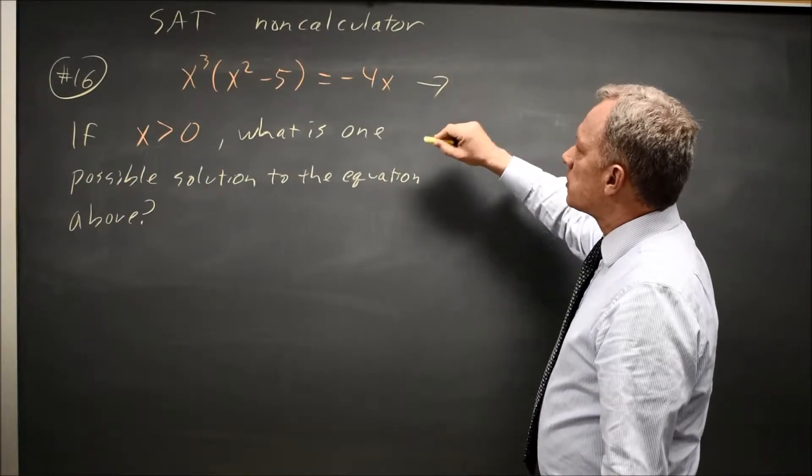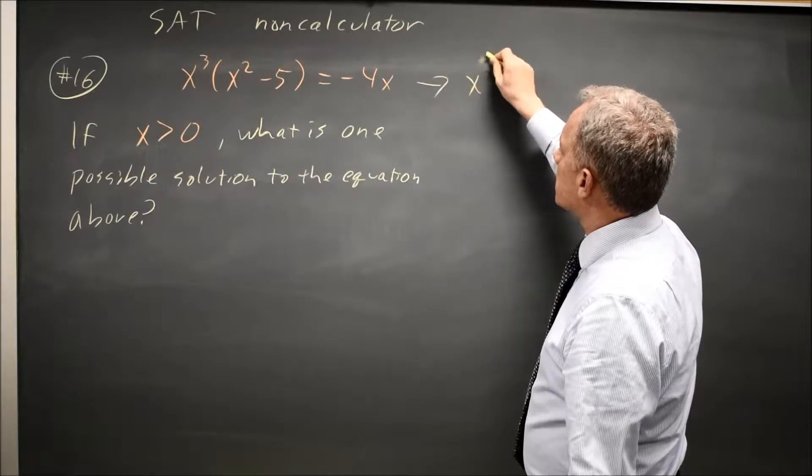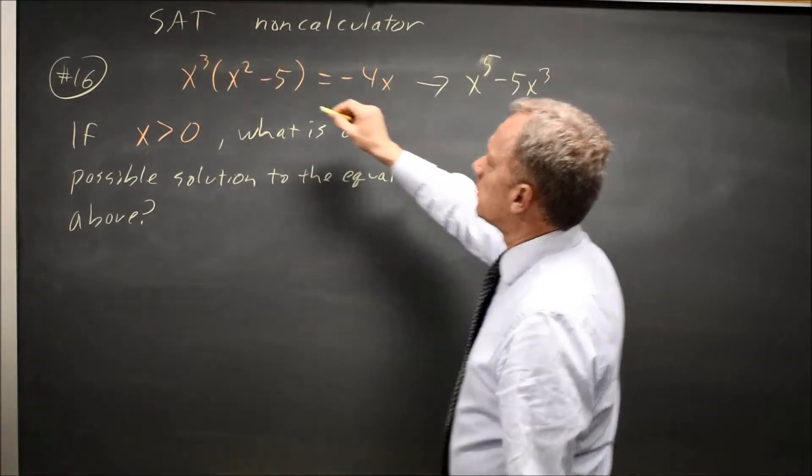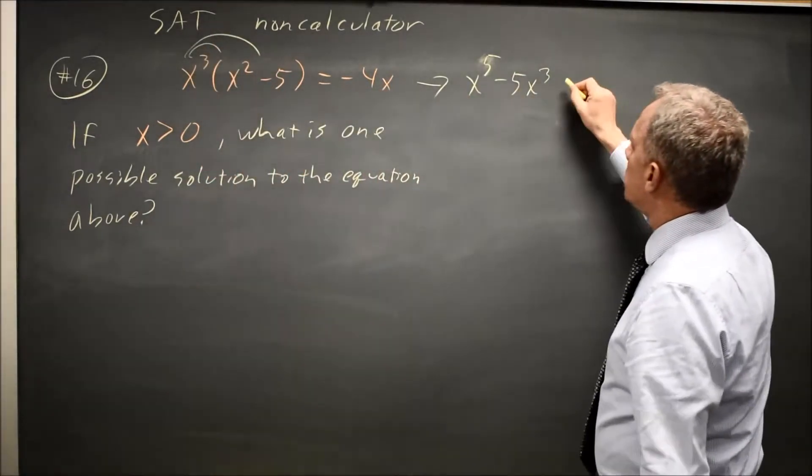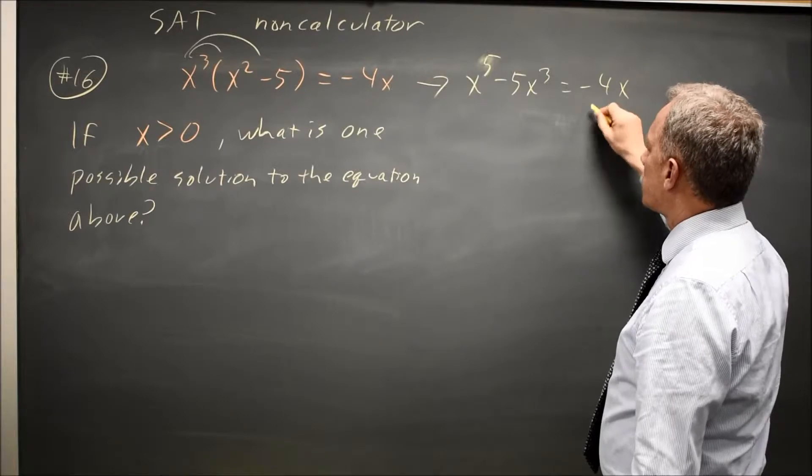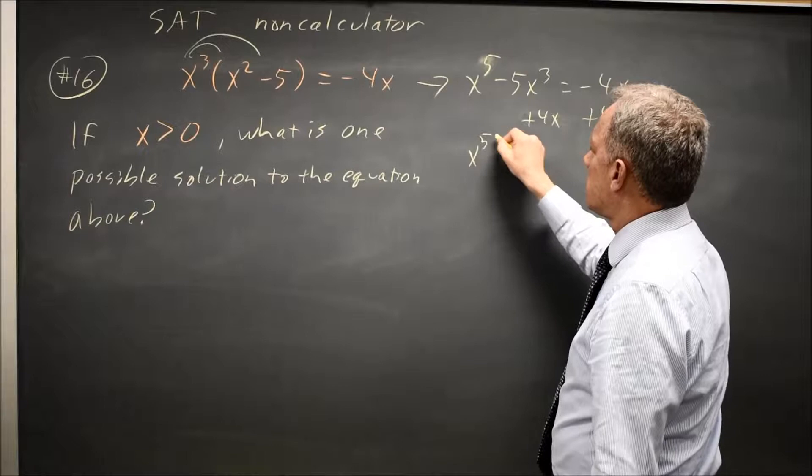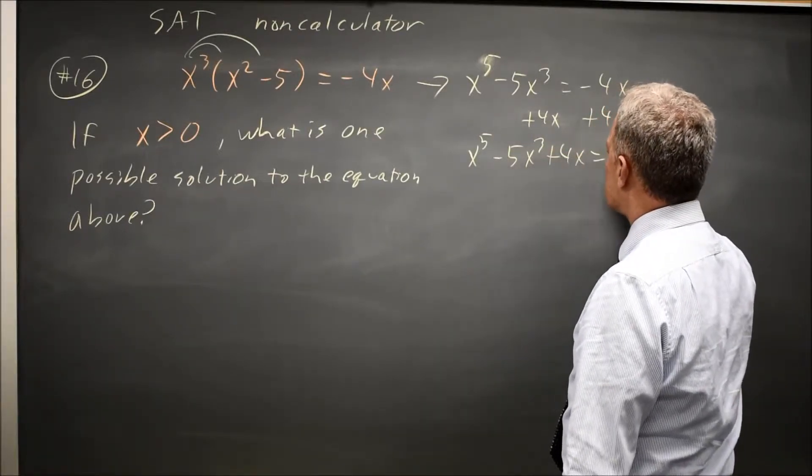So I'm going to distribute first. x cubed times x squared is x to the fifth minus 5 times x cubed. I distribute x cubed to both terms inside equals negative 4x. Then I'm going to add 4x to both sides, giving me x to the fifth minus 5x cubed plus 4x equals zero.